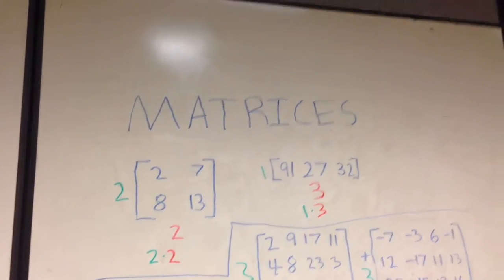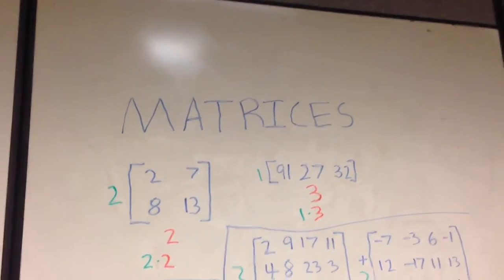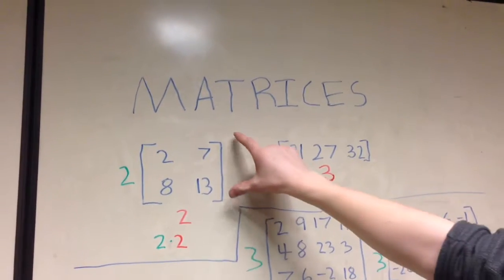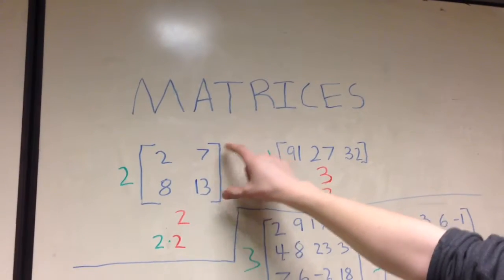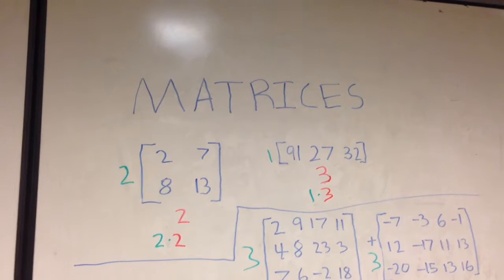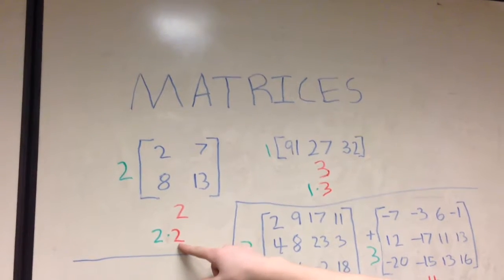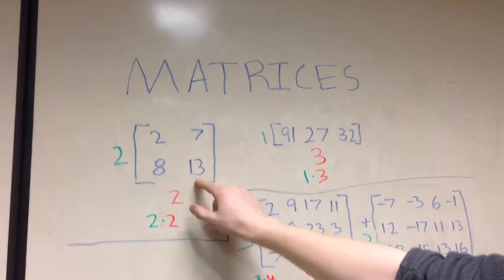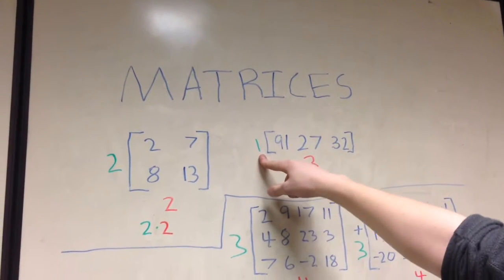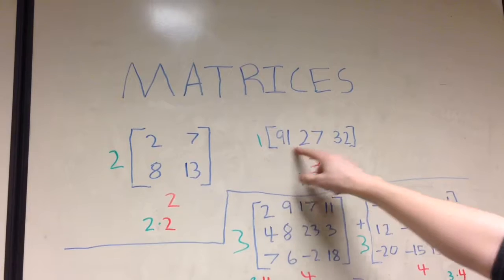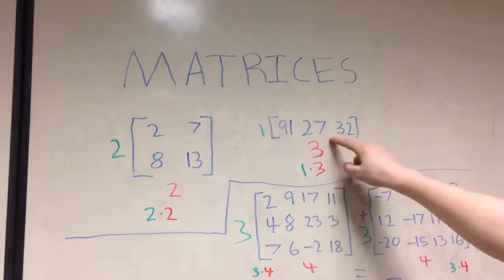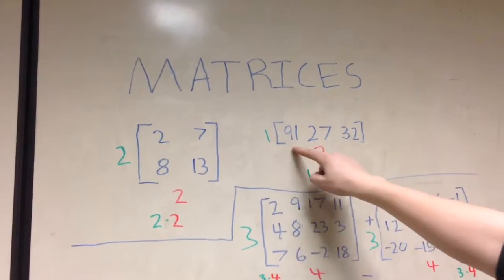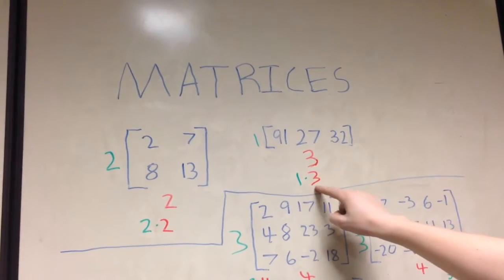I'm Josh and I'm going to be working with my partner Louis and we're going to be teaching you today about matrices. Matrices are numbers organized in brackets that help display information in various ways. This is a two by two matrix because there are two rows and two columns. The first number in every matrix is always the number of rows and the second number is always the number of columns, so there are three columns in this matrix, making it a one by three matrix.